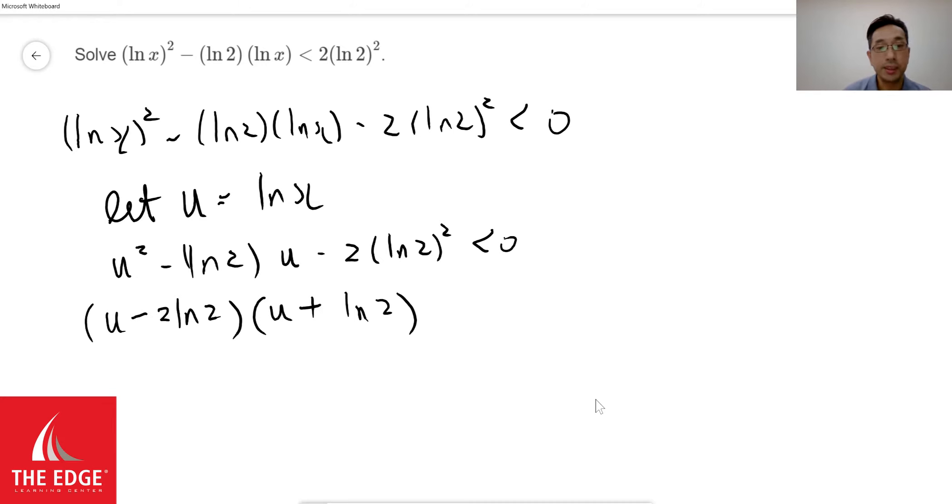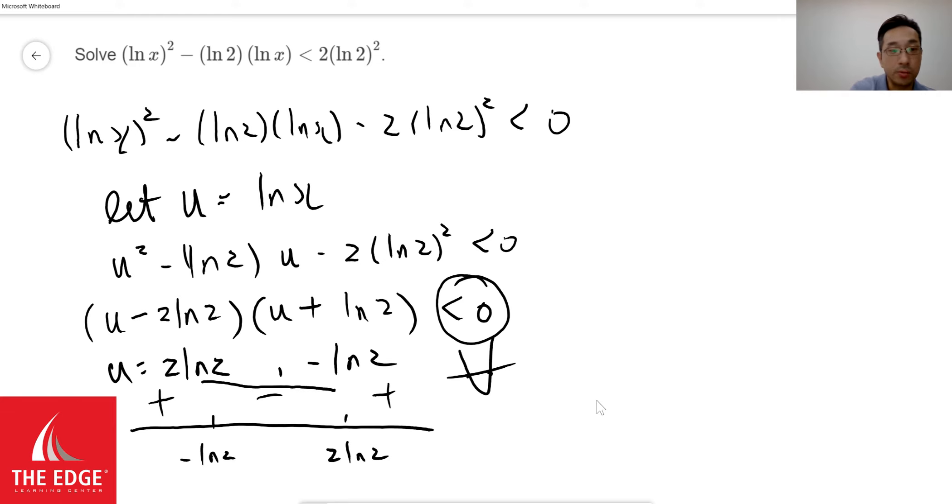So we can see that this is going to be positive here, the middle part will be negative, and then finally the right hand side will be positive. We're focusing on the fact that it has to be less than zero, so whatever is in between must be what we're looking for.